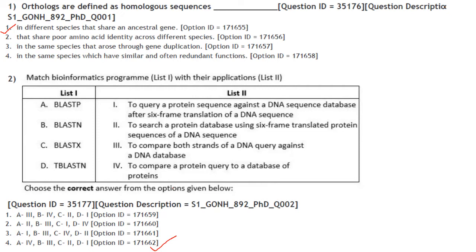Next question: match bioinformatic programs with their application. BlastP is used to compare a protein query to a database of proteins — that is option 4. BlastN compares a DNA query against a DNA database. BlastX searches a protein database using 6-frame translated protein sequences of a DNA sequence. TBlastN queries a protein sequence against a DNA database after 6-frame translation. Answer: A4, B3, C2, D1.